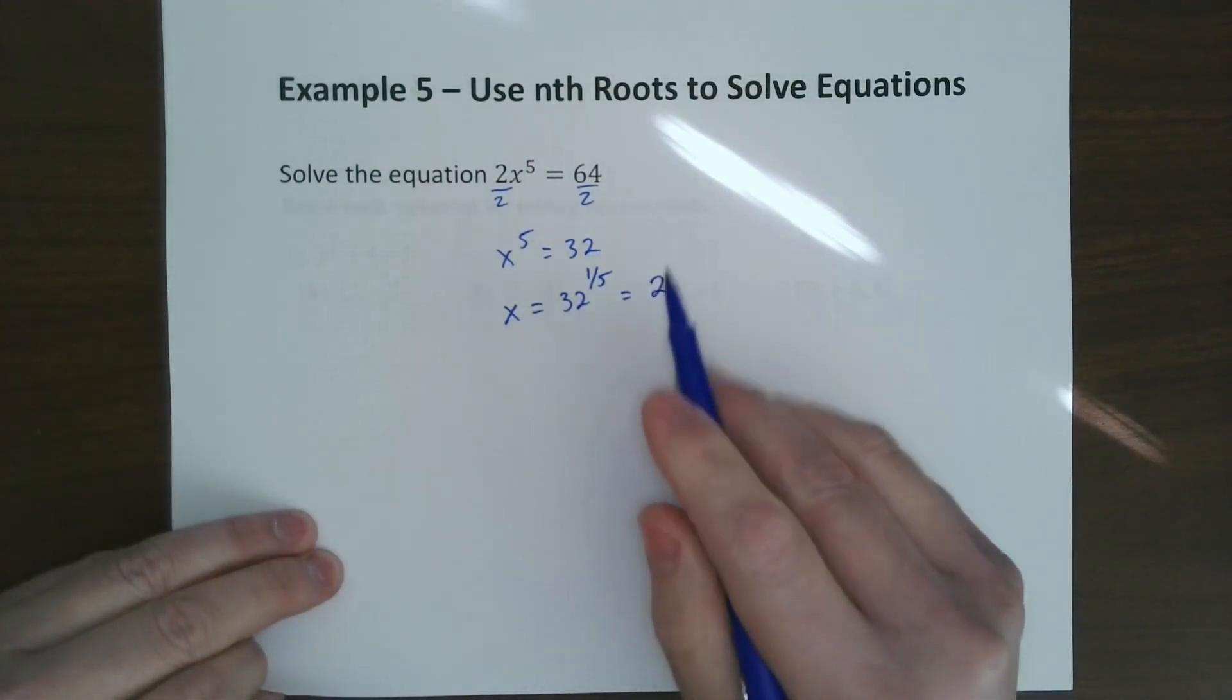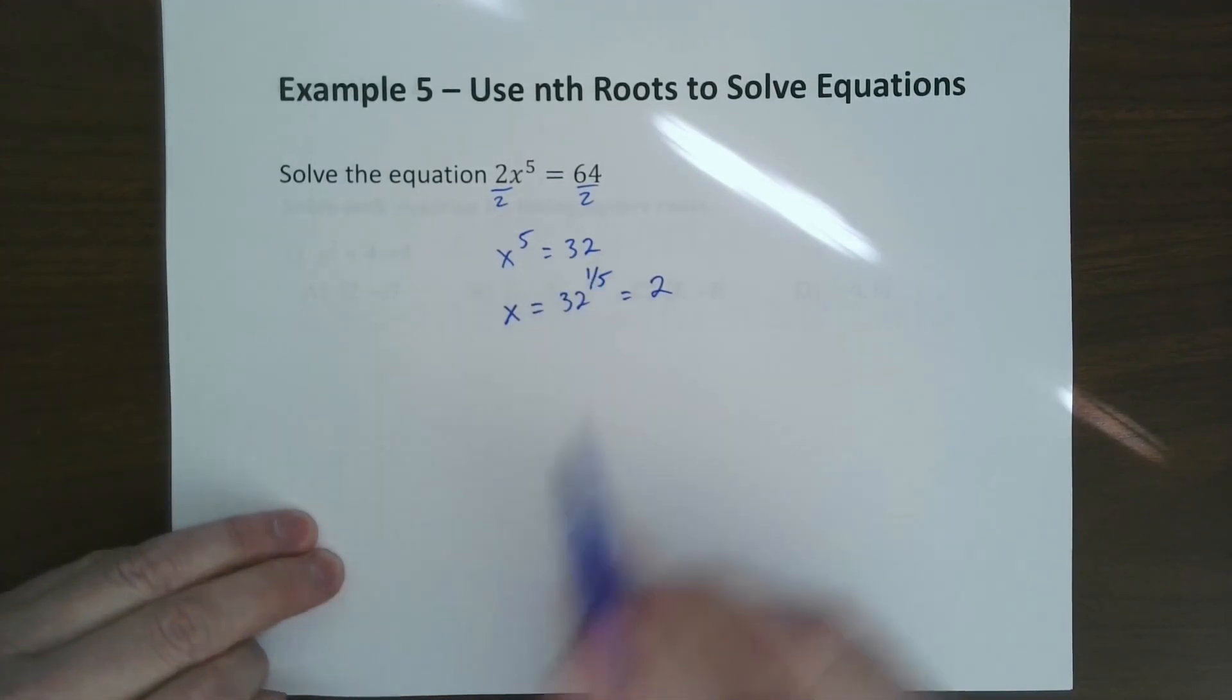If it was even, by the way, we'd have plus or minus. Or if this was negative 32, it'd be negative 2.